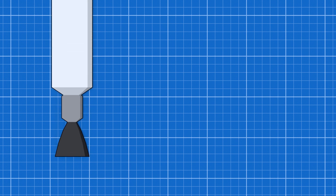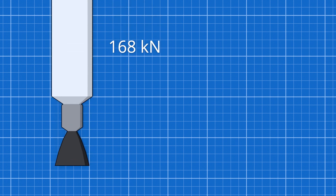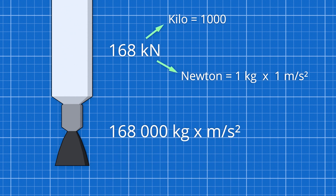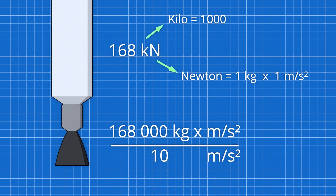In my case it is just one Swivel engine with 168 kN of thrust. Newton is a unit for force needed to accelerate 1 kg of mass by 1 m/s². Kilo just stands for 1000, so in my case the rocket can accelerate 168,000 kg — or 168 metric tons — by 1 m/s². However, in order to lift from the ground the acceleration has to be higher than gravity, which is roughly 10 m/s². So to find out how much your rocket can lift, you simply divide your total thrust by 10, which is 16.8 tons.